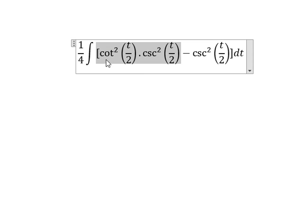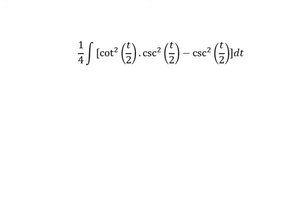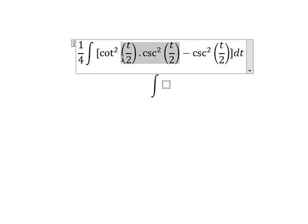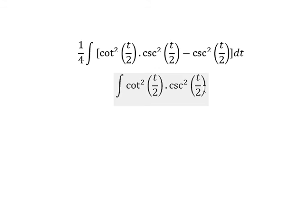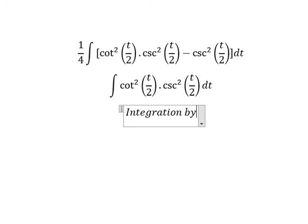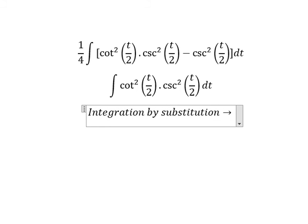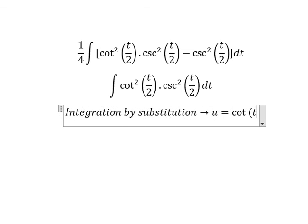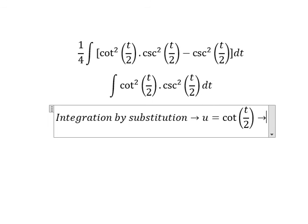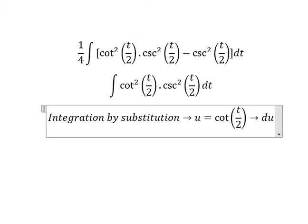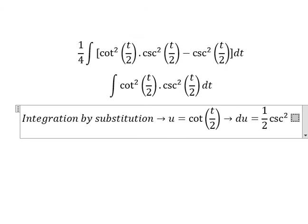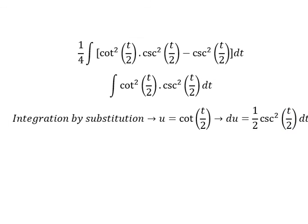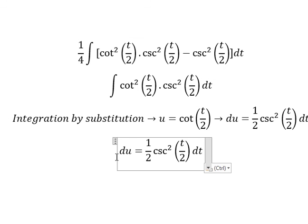Now we concentrate on this part first — integration by substitution. We set u equal to cot(t/2). Taking the first derivative of both sides, we get du equals negative 1/2 cosecant²(t/2) dt. Next, we multiply both sides by 2.